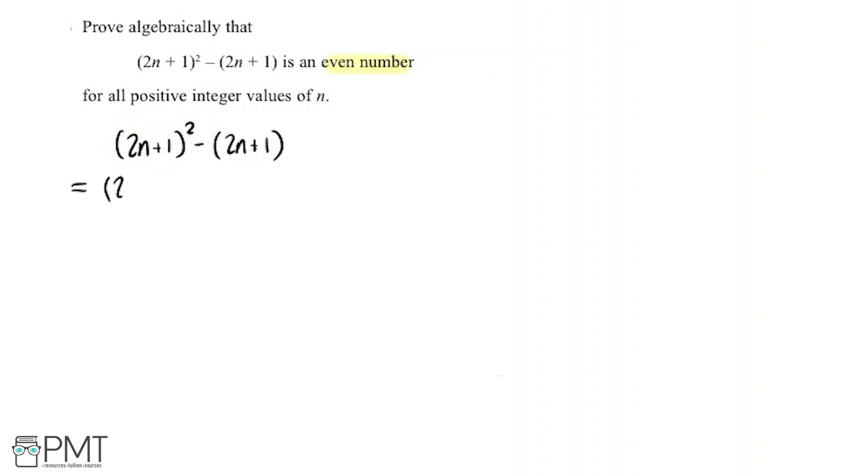So we're going to have 2n plus 1. I'm going to write it out as two sets of brackets because we know when we've got something squared, that's the same as multiplying two things that are the same together. So we've got (2n + 1) times again (2n + 1) and again we've still got this minus (2n + 1) at the end.